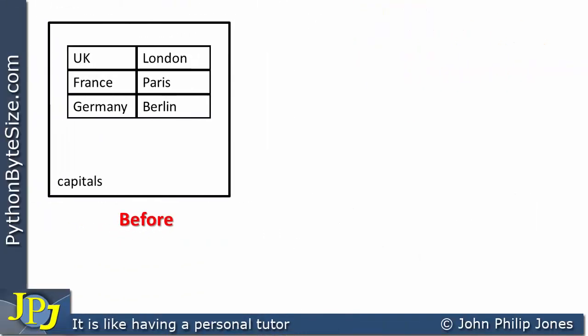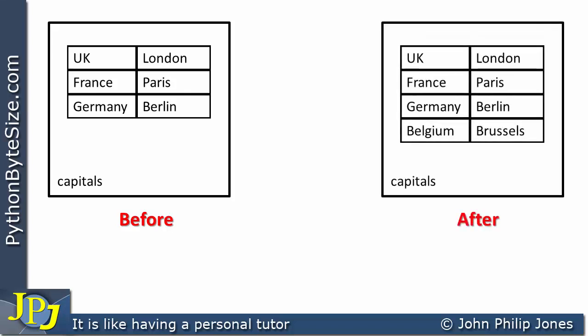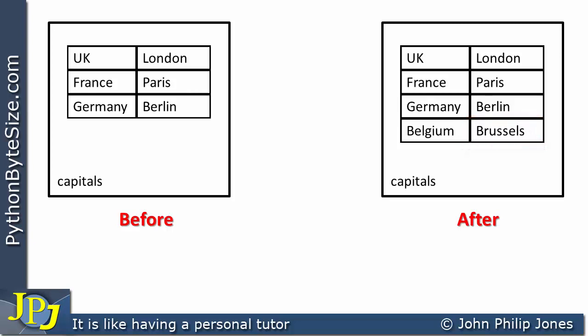Having considered some of the terminology associated with dictionaries, let's turn our attention to how we add a key-value pair item to a dictionary. I'm going to use this diagrammatic representation — the first one we came across in this video. I want to look at the dictionary before, and then after applying a program statement, I want to see another item added — in this case where the key is Belgium and the value is Brussels, because Brussels is the capital of Belgium.